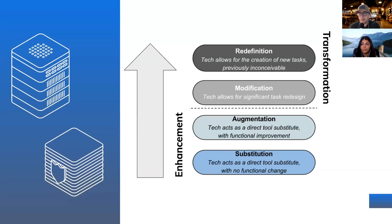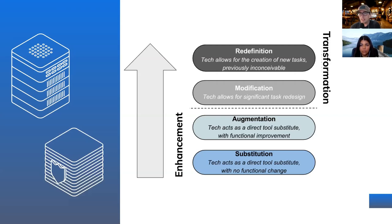Here's a visual showing what the SAMR model looks like with four stages — like rungs of a ladder we want to continuously climb. It's important to look at these and think about the level of student engagement and how the tech tool can enhance that engagement, not the tech tool itself. At the bottom is substitution, where tech acts as a direct substitute — like typing an essay in Google Docs instead of writing on paper, with no real functional change.